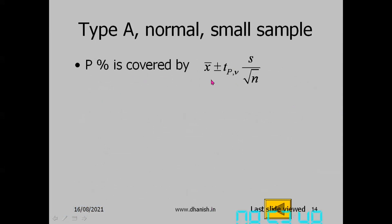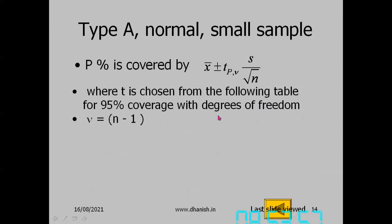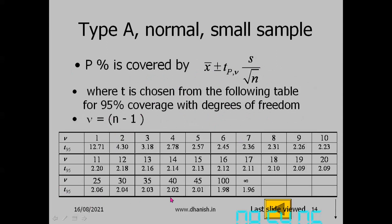For Type A normal small sample, p percent coverage is given by x̄ ± t(p, ν)·(s/√n). The t value is chosen from a table for the desired coverage probability and degrees of freedom ν = n−1. The GUM appendix provides a full table for different probabilities. For example, with 10 samples, use ν = 9 and select t for 95% or 90% as required.